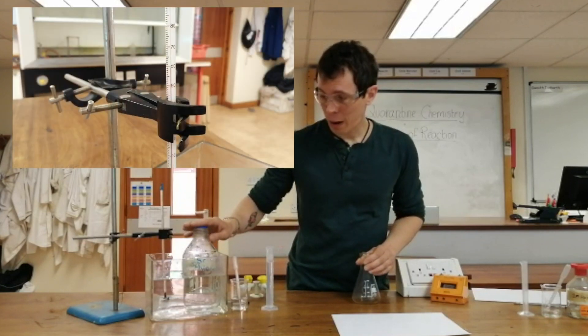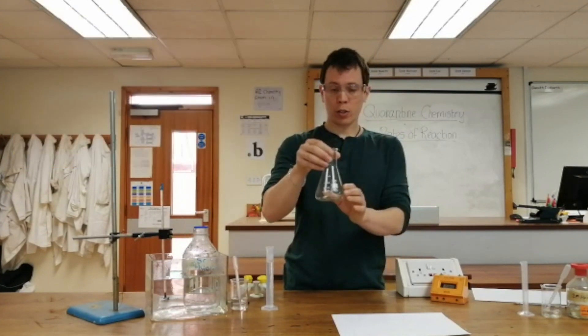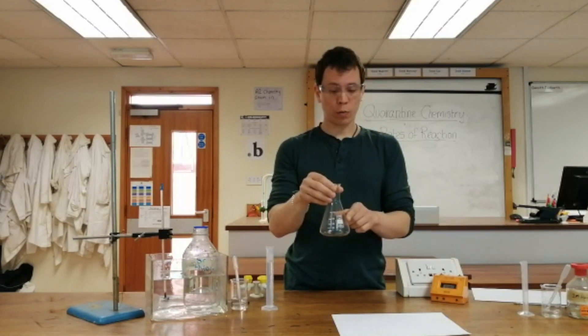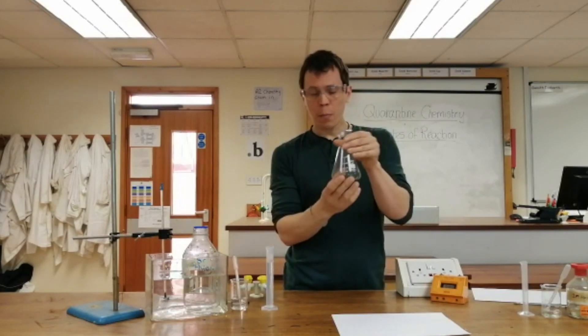I'm going to measure out 25 centimeters cubed of sodium thiosulfate, pop it into a conical flask, and then measure out 5 centimeters cubed of hydrochloric acid. I'll pop that in the conical flask and they will react together, form the tiny particles of sulfur, and our mixture is going to start to become cloudy.